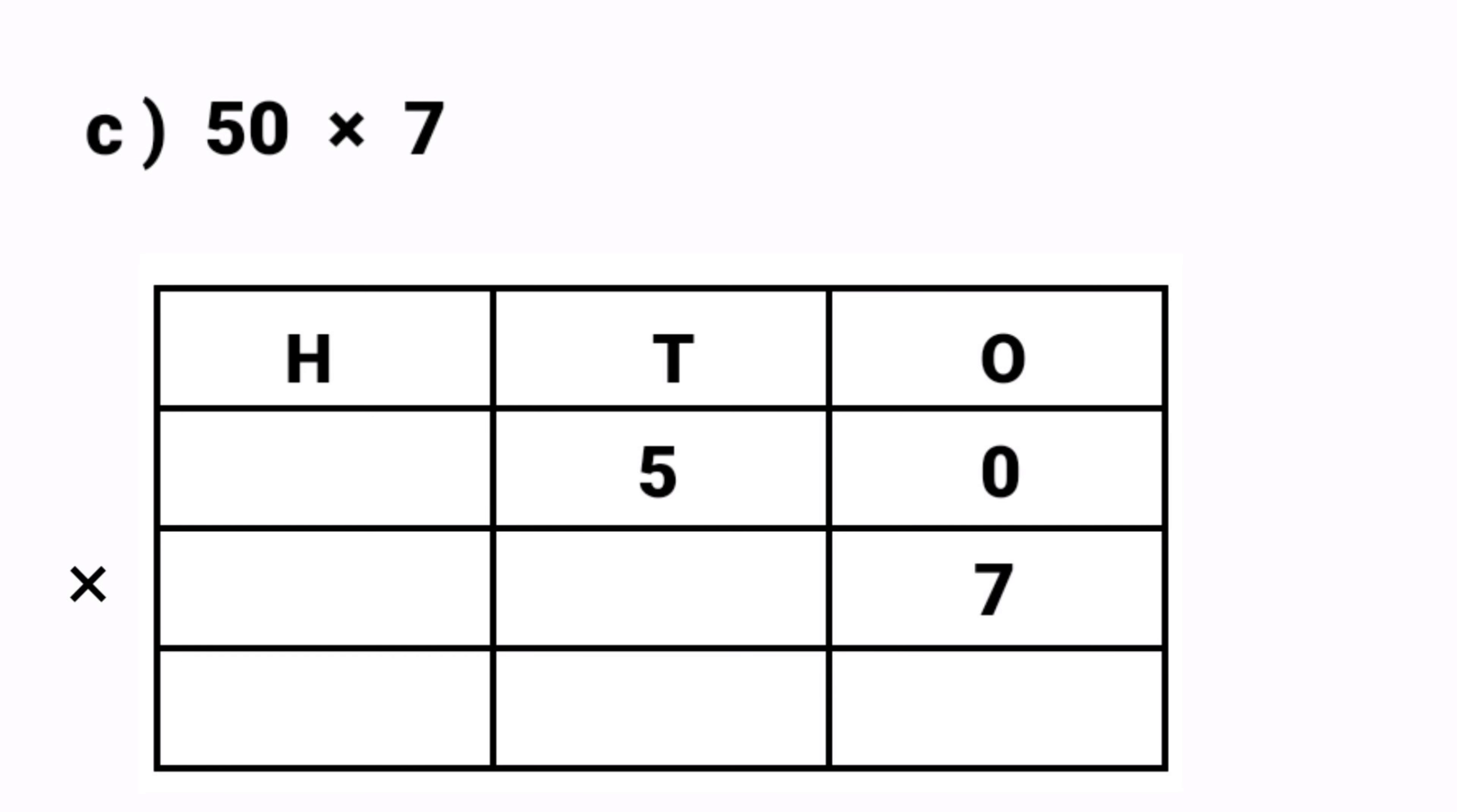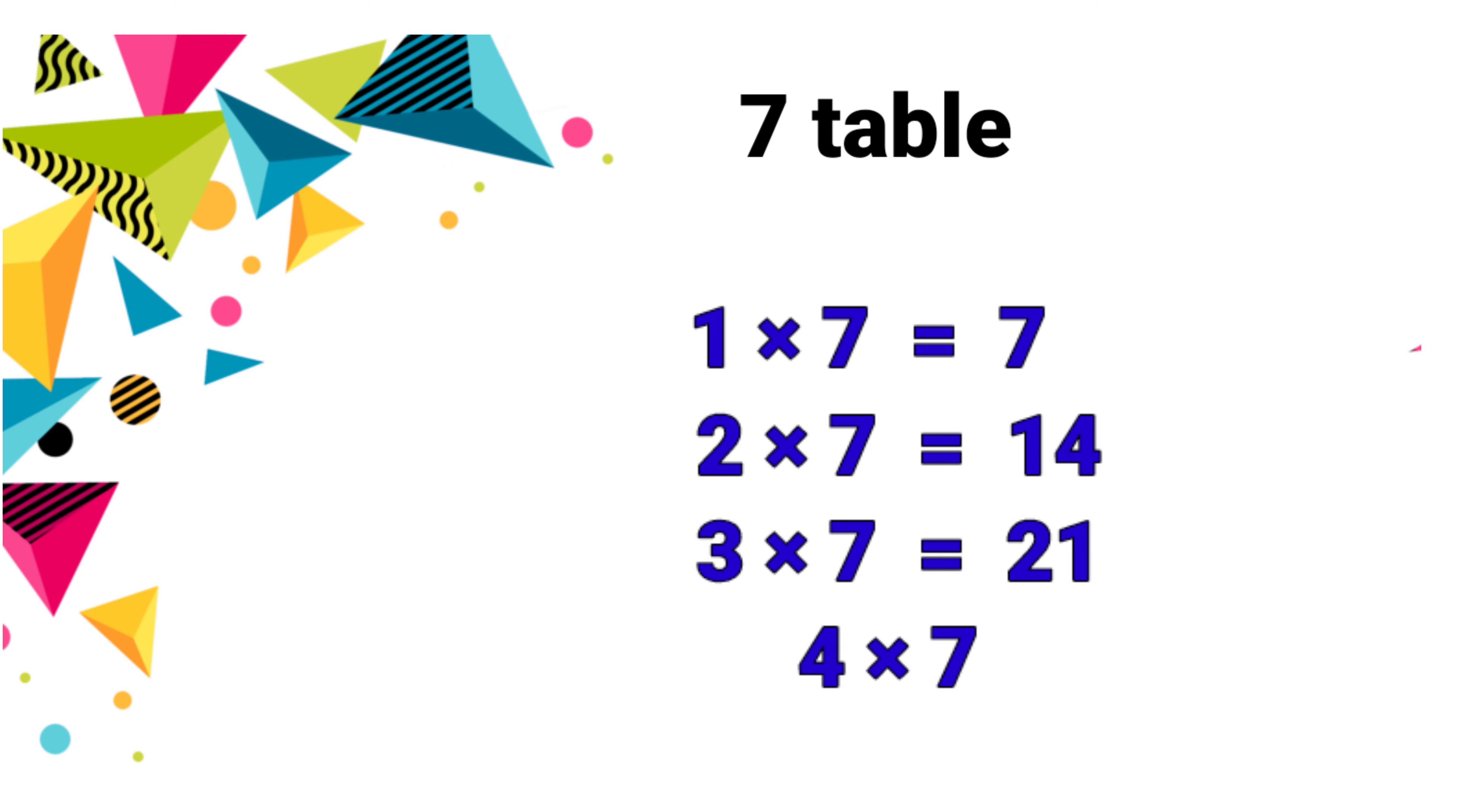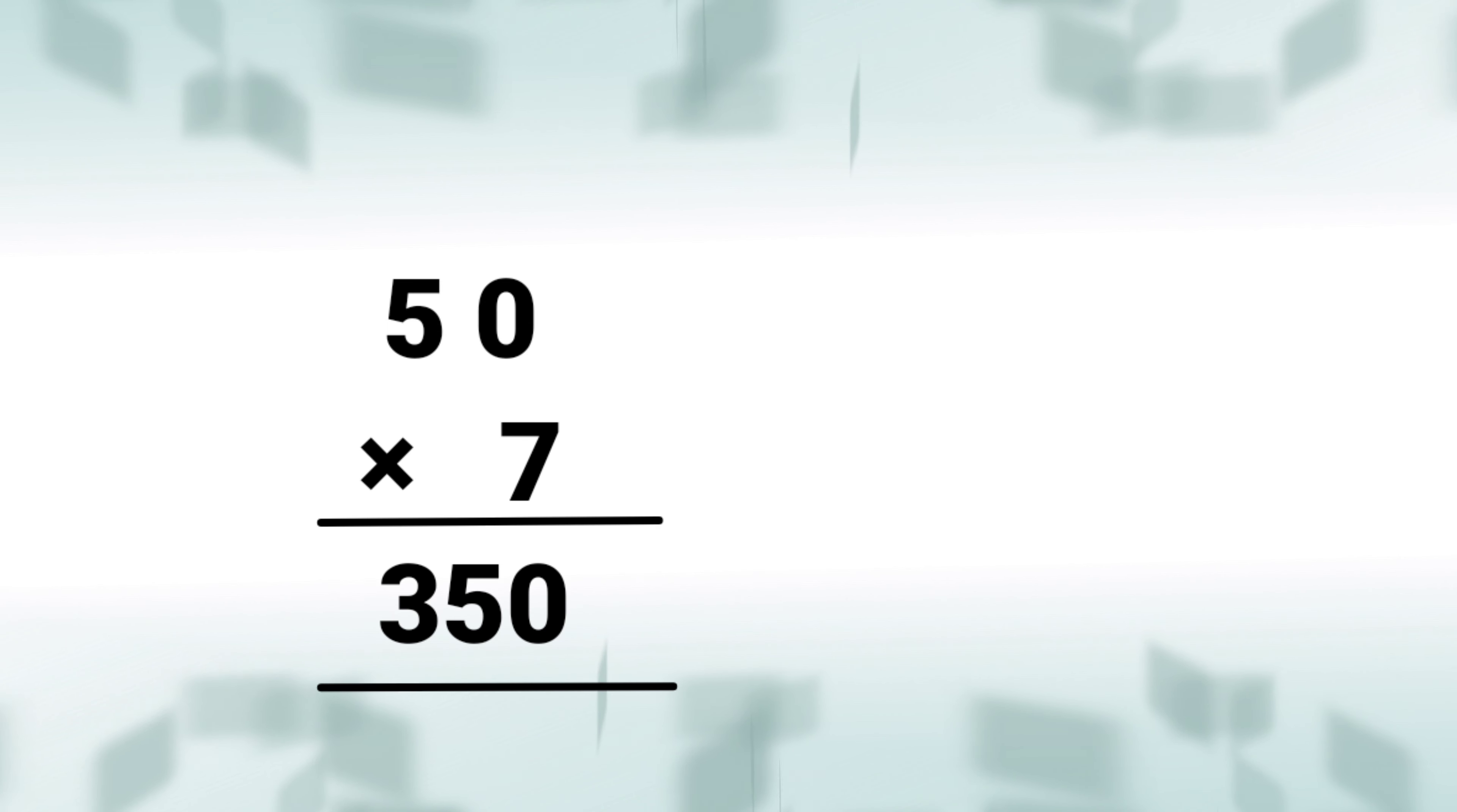50 cross 7. First we have to multiply from 1's place: 0 cross 7. We will get the answer is 0. So 1 7's are 7, 2 7's are 14, 3 7's are 21, 4 7's are 28, 5 7's are 35. So 5 cross 7 is equal to 35. So the answer is 50 cross 7, we will get the answer is 350. 350 is a product.